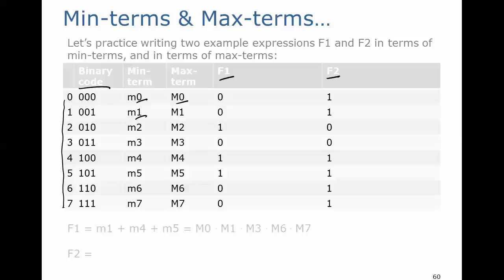Let's write the expression for F1. For F1, we have 1s here, here, and here. When we write a sum of products expression, we're summing min-terms. The min-terms are at entries 2, 4, and 5. So the shorthand is little m2 plus little m4 plus little m5. We can also write this as a product of sums. Now we're taking the product of max-terms. The max-terms are the 0 entries: M0, capital M1, capital M3, capital M6, and capital M7.